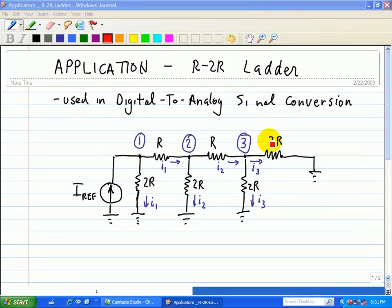First we note that we have 2R at node 3 connected in parallel with 2R shown here. We know that when two resistors are in parallel and they're equal, it's just basically half of the resistance.